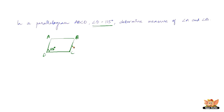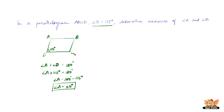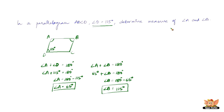We just proved that the sum of two consecutive angles equals 180 degrees. The consecutive angles here are angle A and angle D. So angle A plus angle D equals 180 degrees. Since angle D is 115 degrees, angle A equals 180 degrees minus 115 degrees, which gives angle A equals 65 degrees. Now angle A and angle B are also consecutive angles, so angle A plus angle B equals 180 degrees. With angle A equal to 65 degrees, angle B equals 180 minus 65 equals 115 degrees. Hence, we found the measure of angle A and angle B in the given parallelogram ABCD.